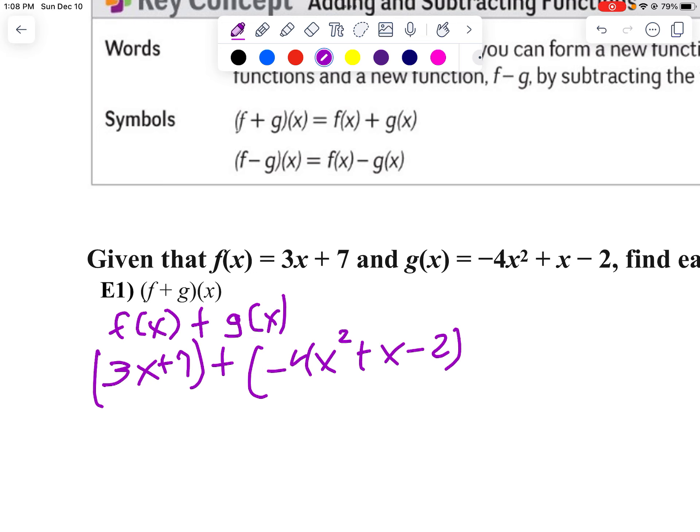We're going to notice only one term has negative 4x squared in it. So that's my second term. So my answer is going to be negative 4x squared. Now let's combine our x's. So we're going to add 3x and 1x. So 3 plus 1 is plus 4x. Finally, we'll add our constant term. 7 minus 2 is positive 5. And there's our answer to combining these two terms by adding.